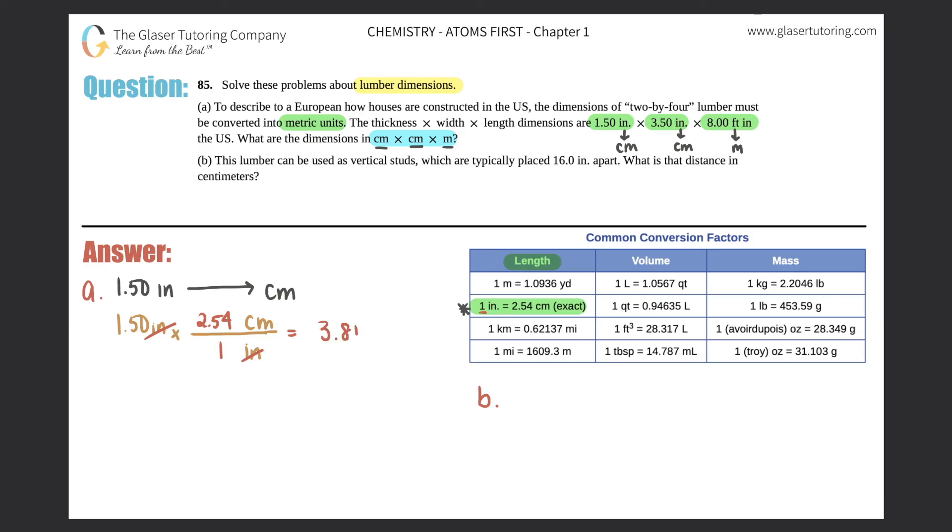The inches cancel and we're left with centimeters. So 1.50 times 2.54, I get 3.81, perfect sig figs so we don't have to do anything about that. Okay, so the first part would be 3.81 centimeter by the next part.